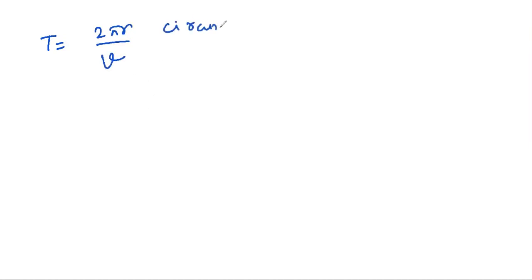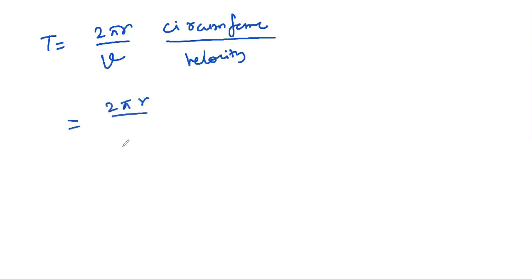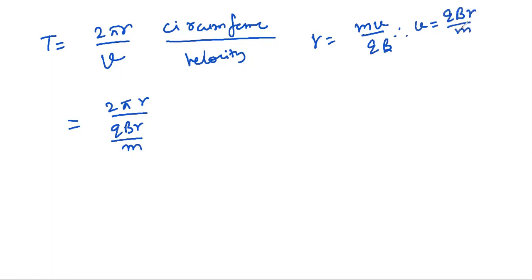Circumference is 2πR and V is velocity. Substitute the value — write 2πR, and at the place of V you write QBR/M, derived from R = MV/QB, therefore V = QBR/M. R cancels and you get T = 2πM/QB.